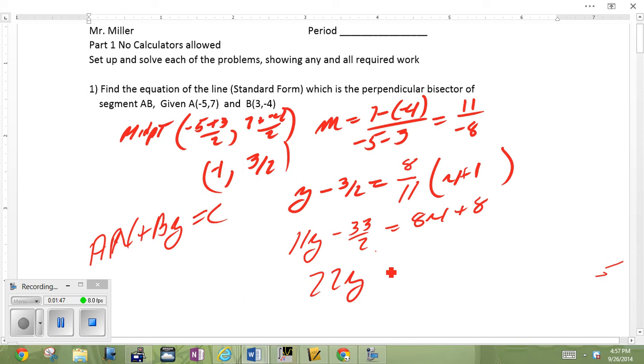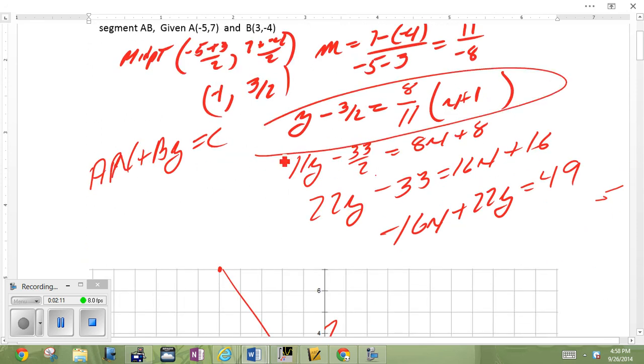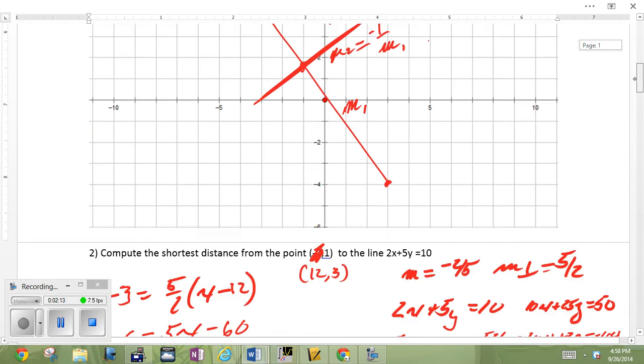22y minus 33 equals 16x plus 16. No big deal. Negative 16x plus 22y equals what? Add 33 to add 33 is 49. There you go. That's the equation of standard form. I don't even care. I just looked at it from there. That was it.